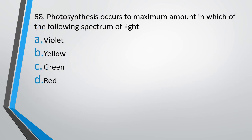Question No. 68: Photosynthesis occurs to maximum amount in which of the following spectrum of light? Violet, yellow, green or red. The correct answer is option D, in the red spectrum.